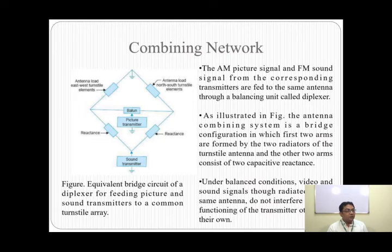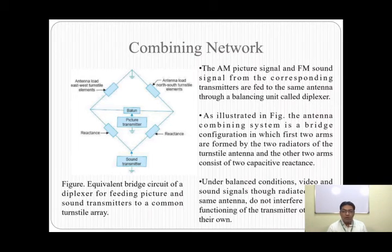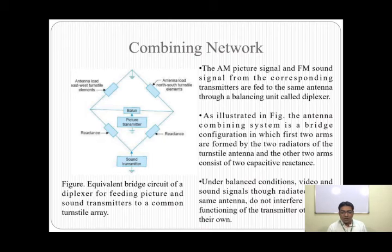The combining network is a bridge configuration where the signal does not interfere with the working of the other transmitter. This is called a diplexer or balancing network, which is an equivalent bridge circuit used for feeding the picture and sound transmitters to a common turnstile array. The bridge configuration has its first two arms formed by the two radiators of the turnstile antenna, and the other two arms consist of two capacitive reactors. Under balanced conditions, the video and sound signals are radiated by the same antenna without interfering with each other. A balun (balance-to-unbalance transformer) is also used in this arrangement.